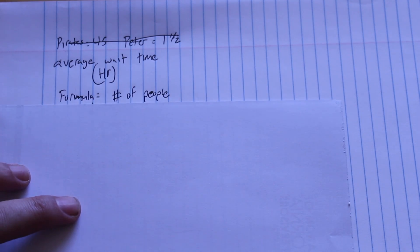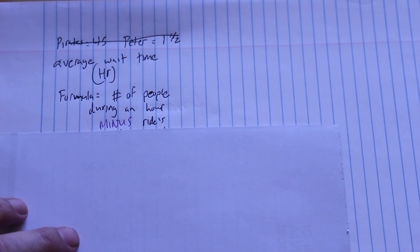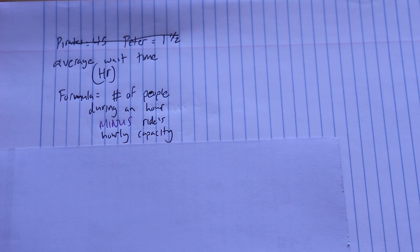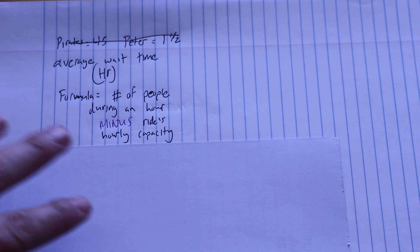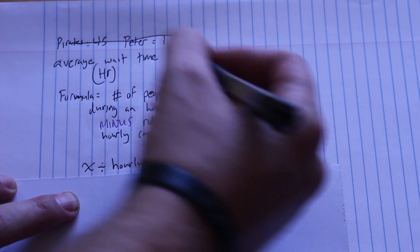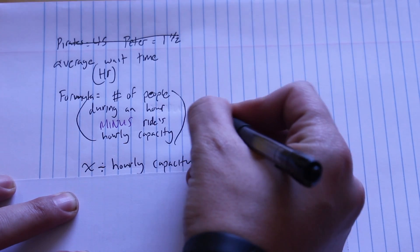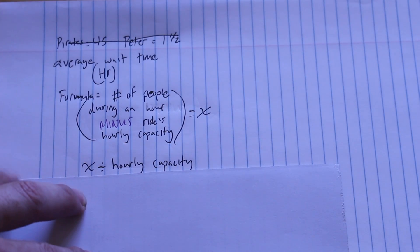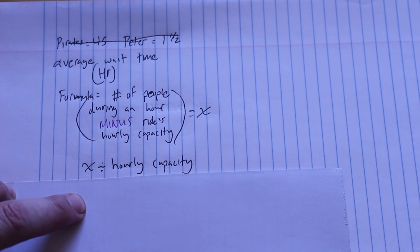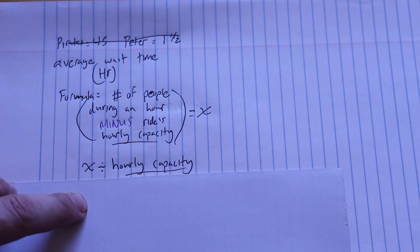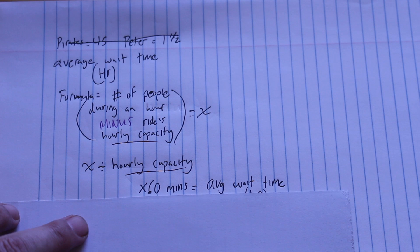What we need to use is our formula for the average wait time to figure out what the actual wait time is going to be. So the average wait time breaks down like this: the number of people during an hour minus the ride's hourly capacity. We're going to call this X. Then you'll take this X and divide it by the hourly capacity. That's right, you're going to use this number twice. When you divide it by the hourly capacity, then you multiply it by 60, which is the number of minutes in an hour, and you'll get your average wait time.